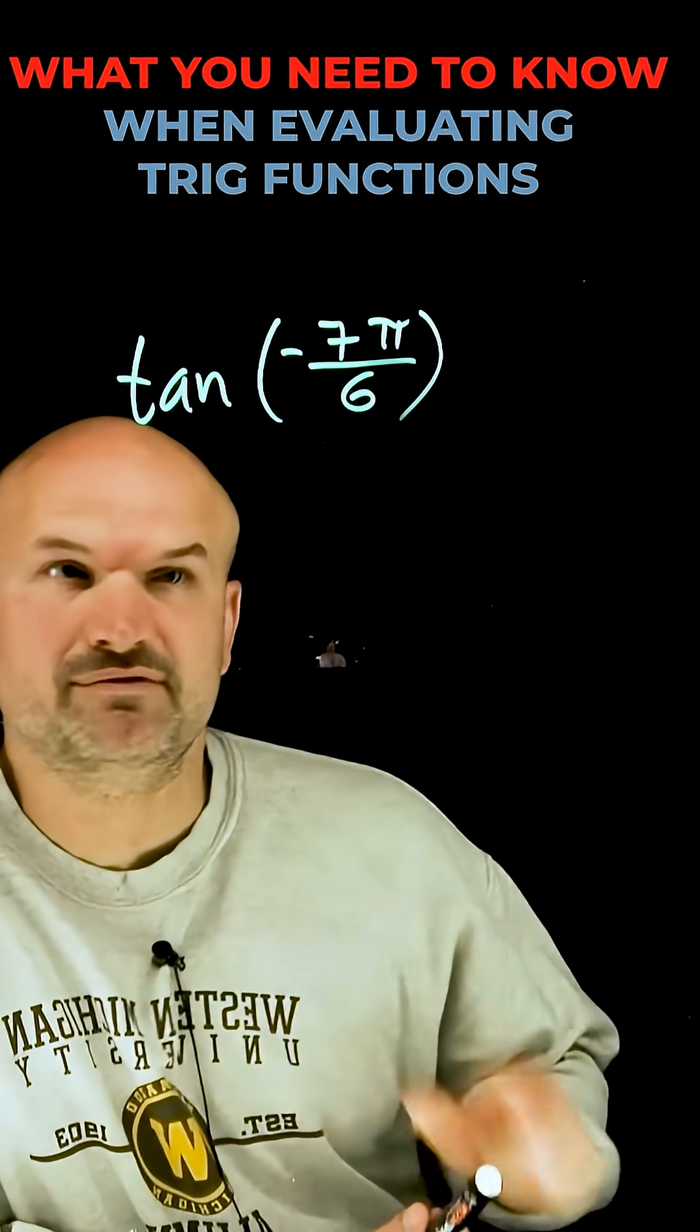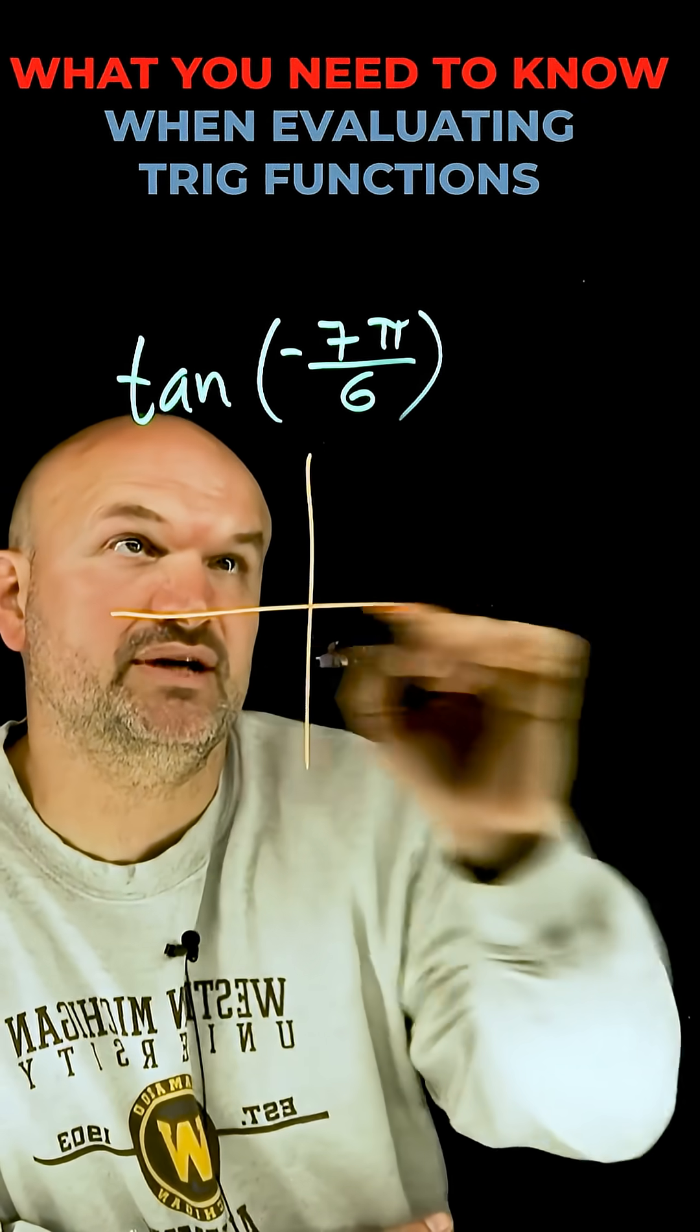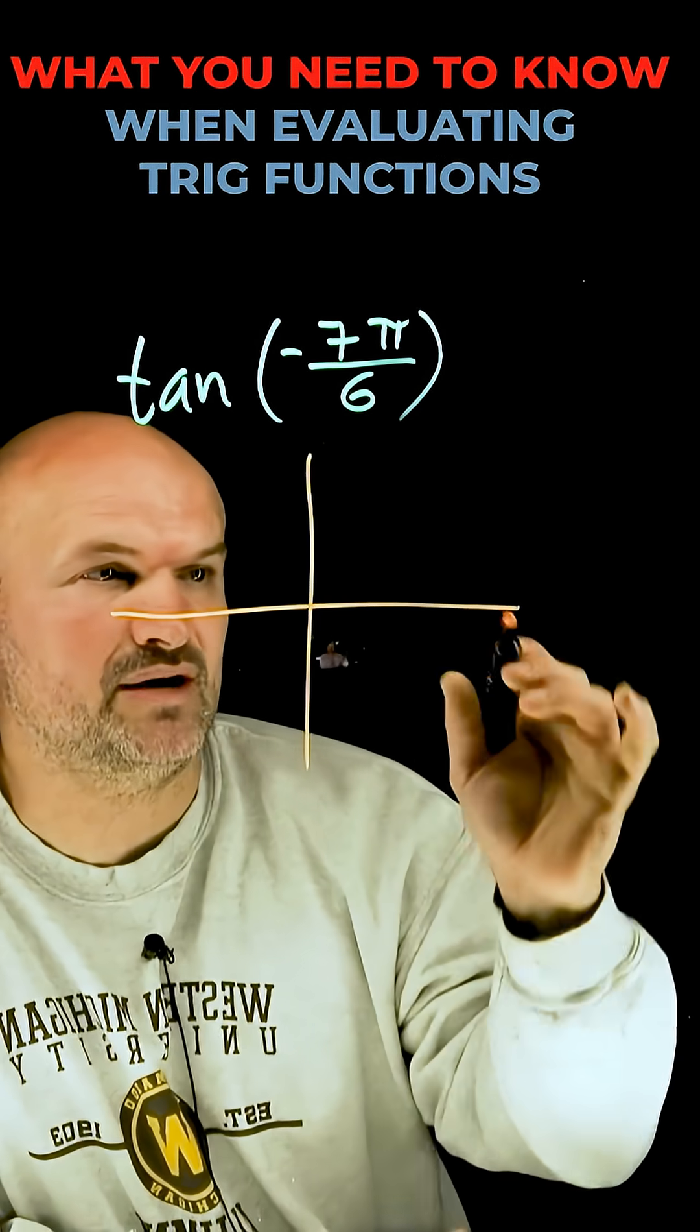Let's go and evaluate the tangent of negative 7 pi over 6. The first thing we're going to do is graph the angle negative 7 pi over 6.